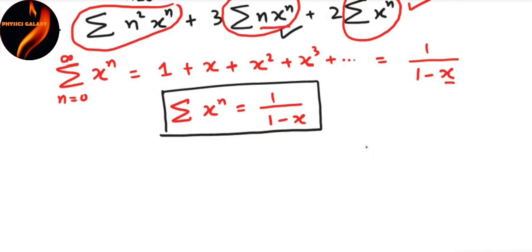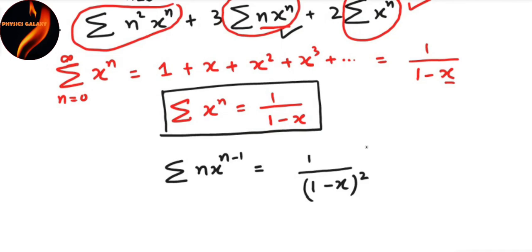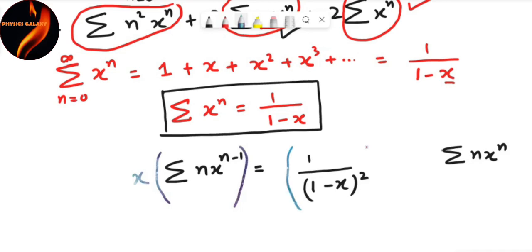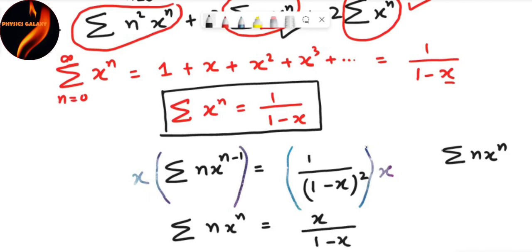Differentiating both sides of summation x to the power n equals 1/(1-x), we get summation n x to the power n minus 1 equals 1/(1-x)². But we need summation n x to the power n, so we multiply both sides by x, giving summation n x to the power n equals x divided by (1 minus x) squared. That is our second summation.